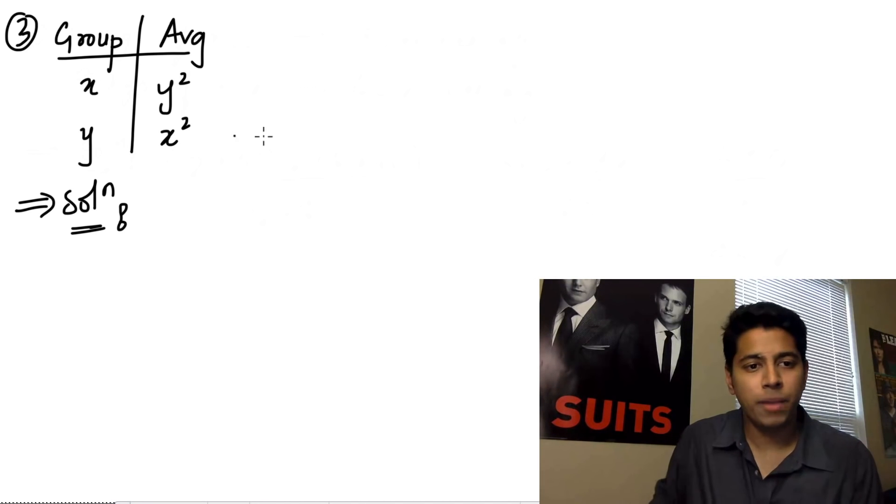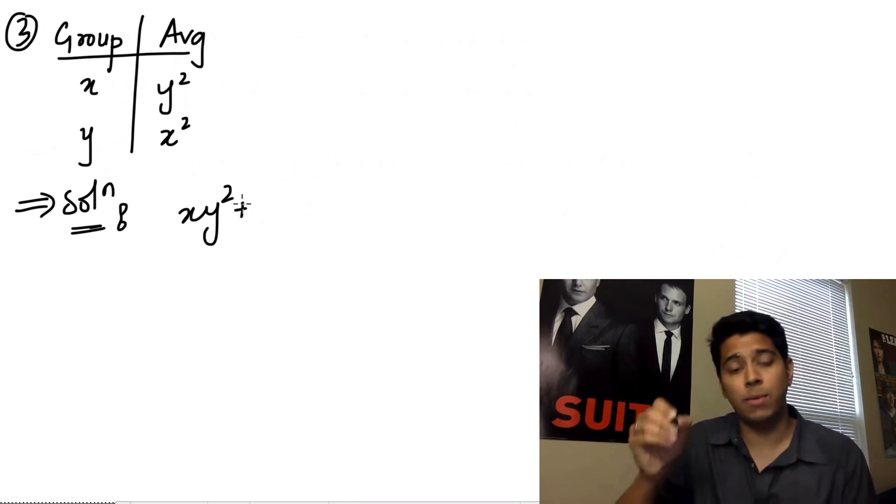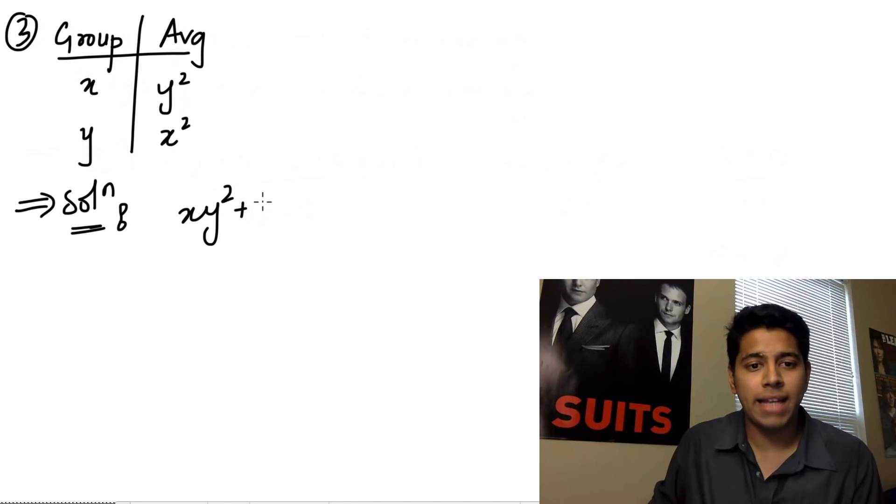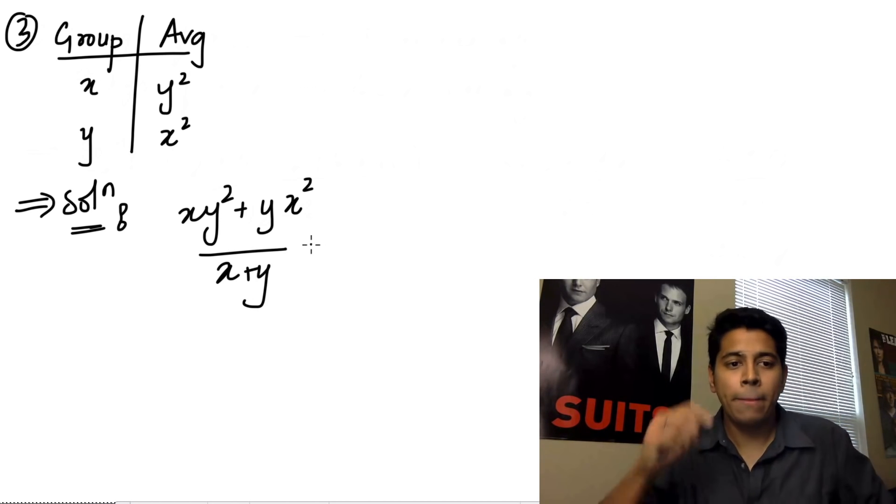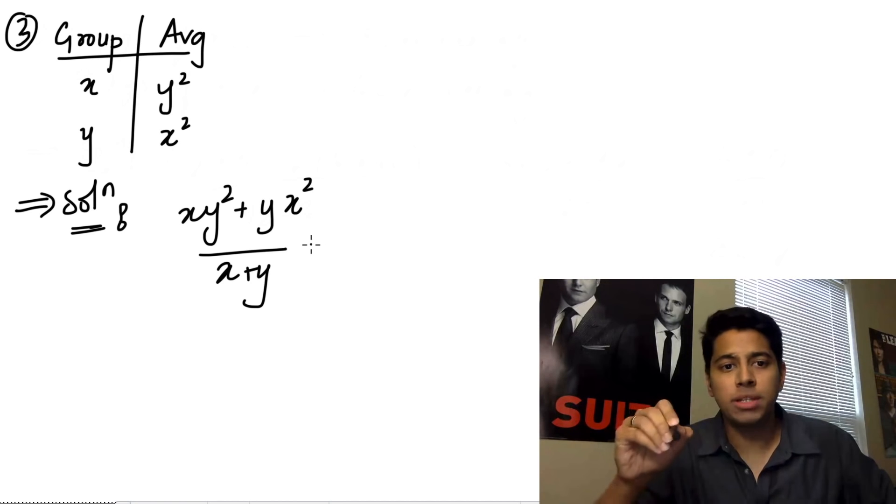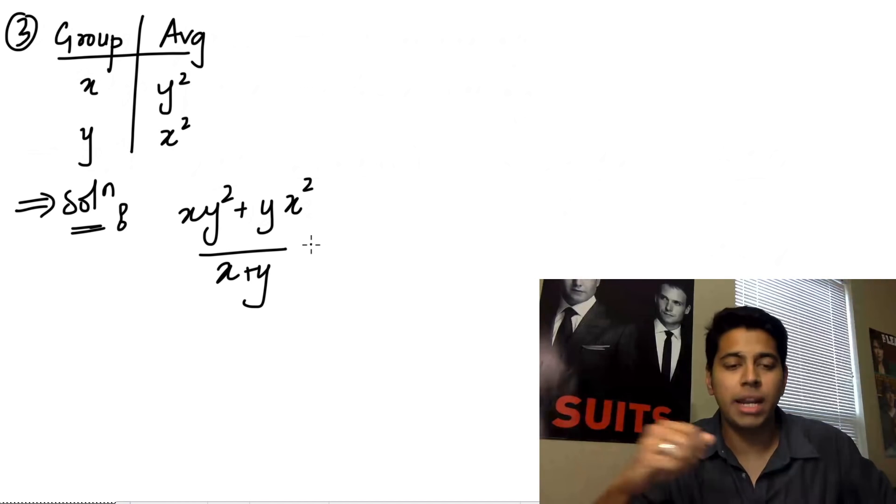You can just write xy square. You're multiplying x and y square plus yx square, divided by x plus y. Now, this would be the answer. But what will happen is you look into your options and this is not there in your options. And then you'll say that Daniel told you to solve it like this, but there's no option.